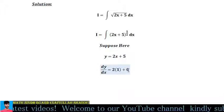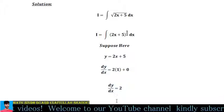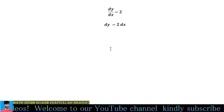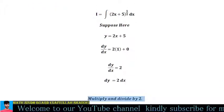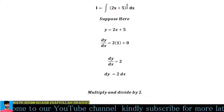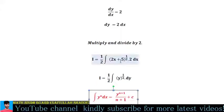From dy/dx = 2, we get dy = 2dx. Now you can see we have dx in the original integral, so multiply and divide by 2 to set up the substitution.